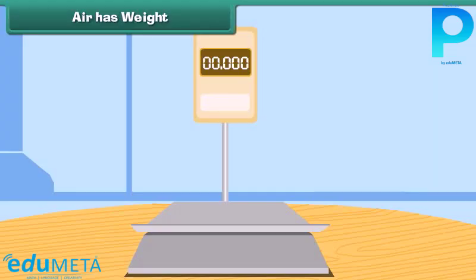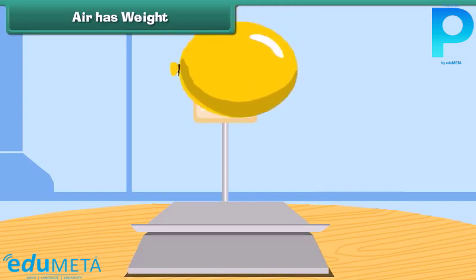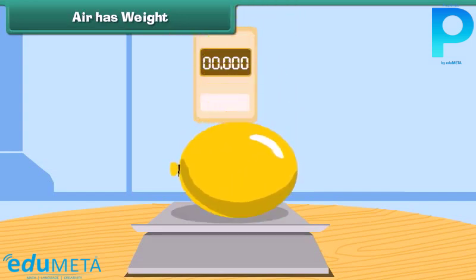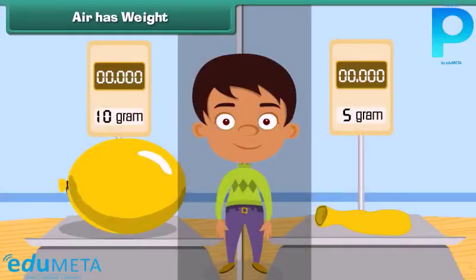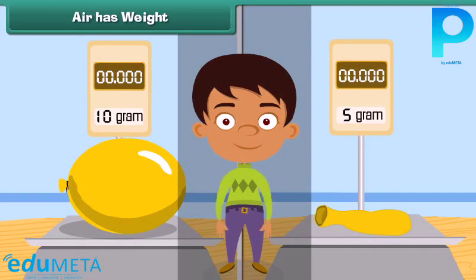Air has weight. Take an inflated balloon and weigh it. Now remove the air and deflate the balloon, then weigh it once more. The balloon had more weight when it was inflated. This proves that air has weight.